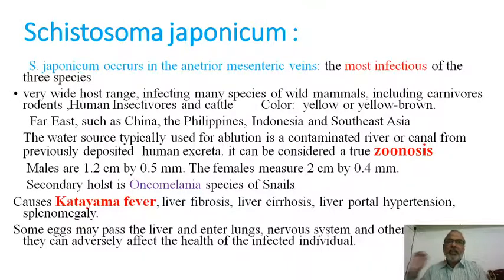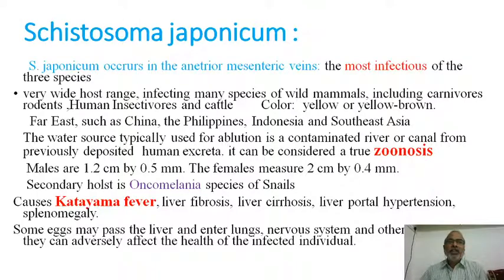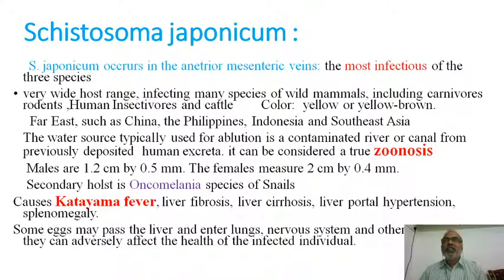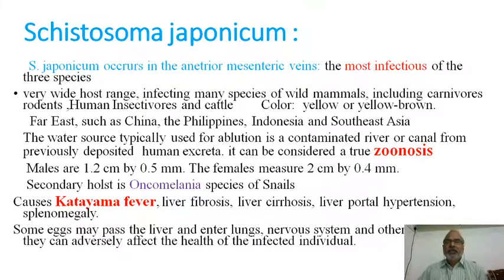The main source of infection is water. In endemic countries, there is a custom of using water for ablution, and contamination of water with human feces or excreta is a very important cause. A lot of spreading from animal species also occurs for Schistosoma japonicum, making it very dangerous. It also acts as a source of zoonosis. The male S. japonicum measures 1.2 cm in length and 0.5 mm in thickness, while females measure 2 cm in length and 0.4 mm in diameter. The intermediate host is Oncomelania species of snails.